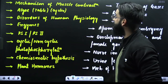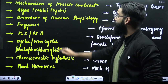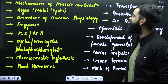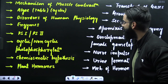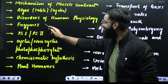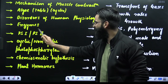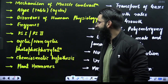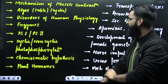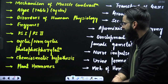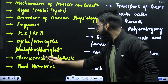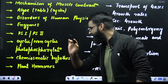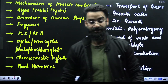You have got mechanism of muscle contraction, algae, disorders of human physiology, enzymes, PS1, PS2, cyclic, non-cyclic photophosphorylation, chemiosmotic hypothesis, and plant hormones.